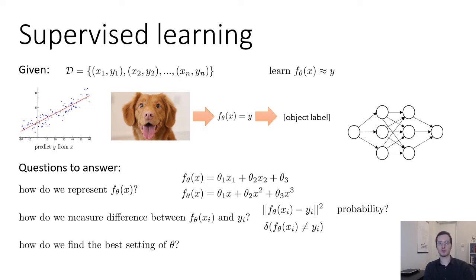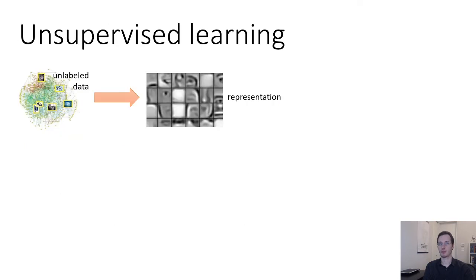And then we have to figure out how to find the best setting of theta. We need to actually find, we need to actually design an algorithm that will modify theta to get f_theta of x to be as close to y as possible for the x y tuples in your training set. This is called an optimization algorithm. There are many choices like random search, gradient descent, least squares, and so on, and we'll talk about one particular choice again in today's lecture. All right, so that's supervised learning.